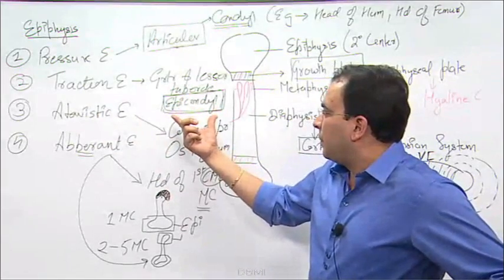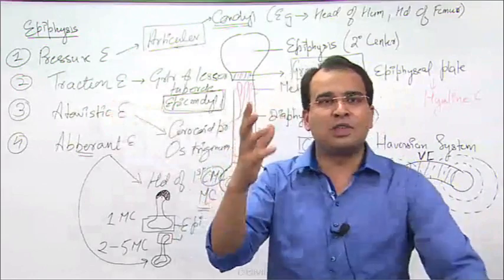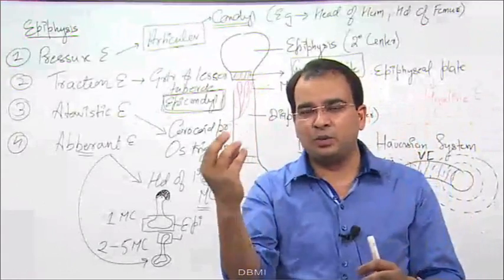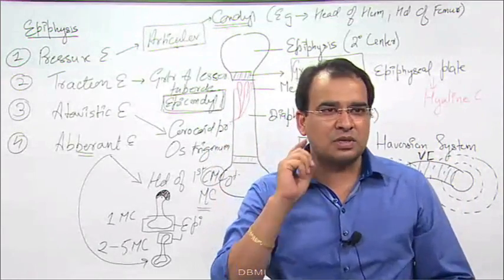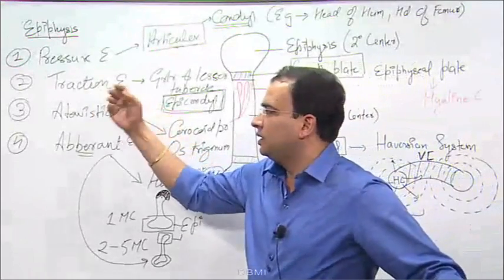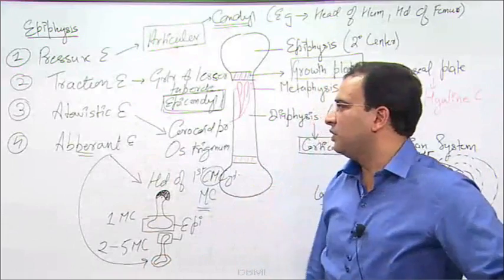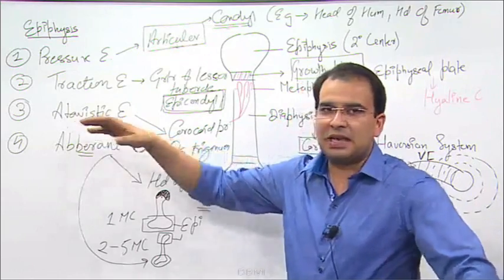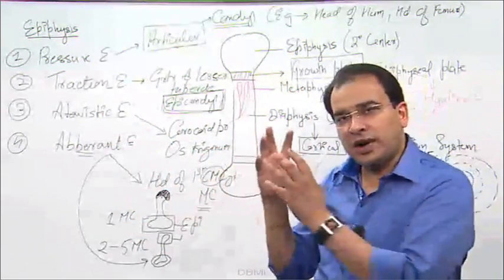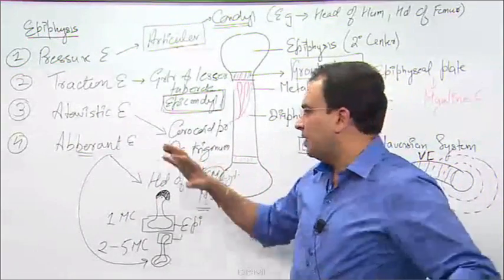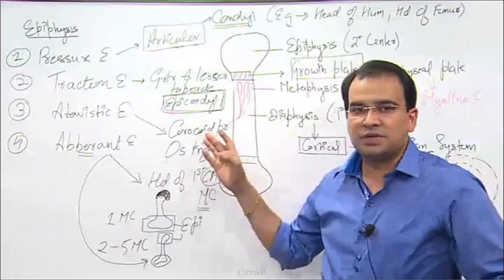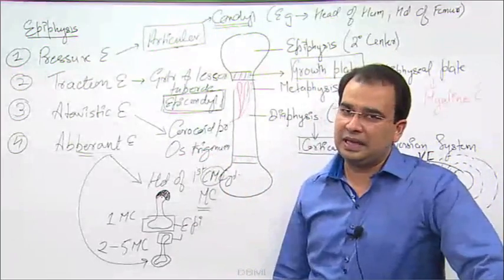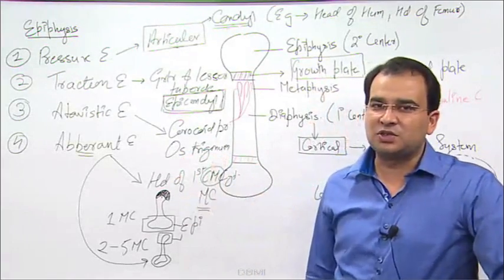That does not mean apart from epicondyle we do not have traction epiphyses. The part of a long bone which is not forming the joint and projecting out — like greater tubercle, lesser tubercle, greater trochanter, lesser trochanter, mastoid process — all these projections come under traction epiphysis. Traction means pull. Then we have atavistic epiphysis: the bone was initially separate, joined with the neighboring bone and is now residing with it. The example is coracoid process of the scapula — coracoid process was a separate bone in lower animals — and os trigonum of the calcaneum, which is the posterior tubercle of the calcaneum.